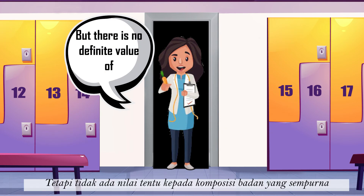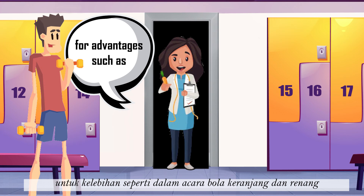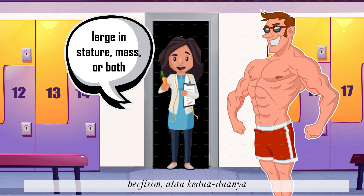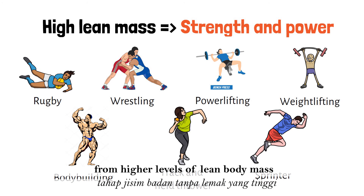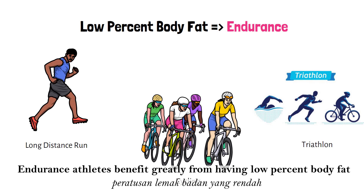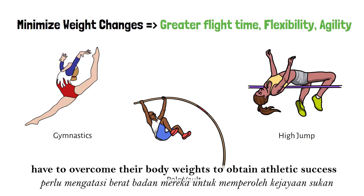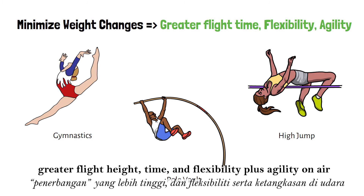Great body composition does help in sports performance improvement, but there is no definite value of what is known as a perfect body composition. Some sports require taller height or longer limbs for advantages, such as basketball or swimming. Some require athletes to be large in stature, mass, or both, whereas some athletes prosper when they are small. Strength and power athletes benefit greatly from higher levels of lean body mass, while endurance athletes benefit greatly from having a low percentage of body fat. Gymnasts, pole vaulters, and high jumpers must overcome their body weights, so minimizing mass enables greater flight height, time, and flexibility plus agility in the air.